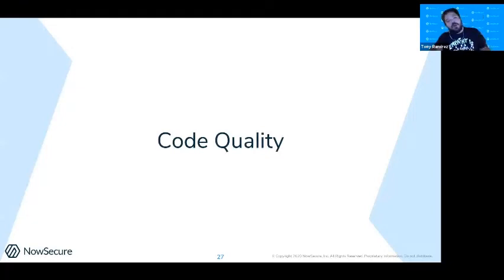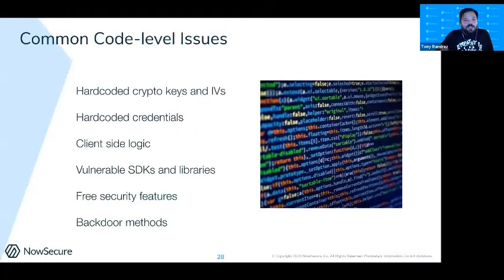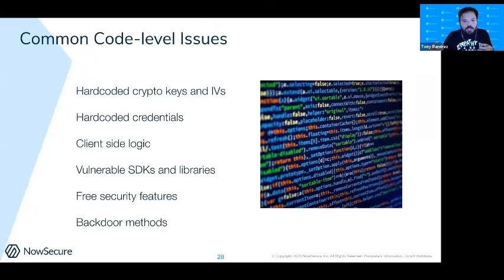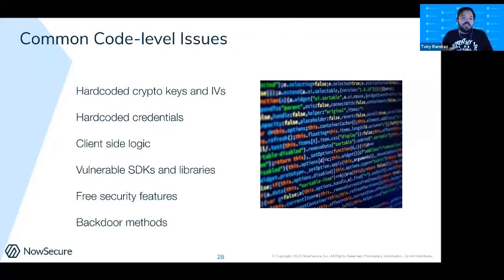Finally, code quality — a really interesting area and a whole other skill group in mobile. We're looking at application code and seeing issues like hardcoded crypto keys, hardcoded credentials in the application. The scariest thing, in my opinion, is client-side logic, where an application gives over-permissions within the app and an attacker can, for example, sign a JWT to themselves through the mobile app.